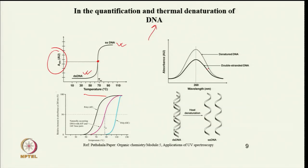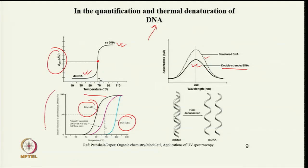By looking at half the maximum absorbance at A260, we can determine the Tm value. Double-stranded DNA has lower absorbance compared to denatured DNA. AT base pairs and GC base pairs have different Tm values. Poly-AT has a Tm of around 70°C while poly-GC has a Tm of around 110°C, showing that poly-GC is more stable.